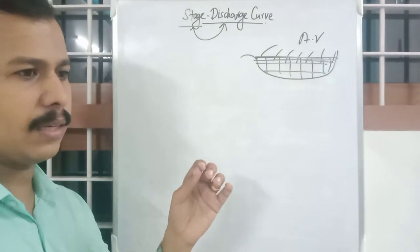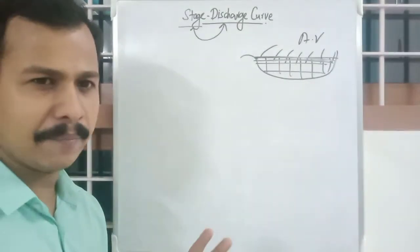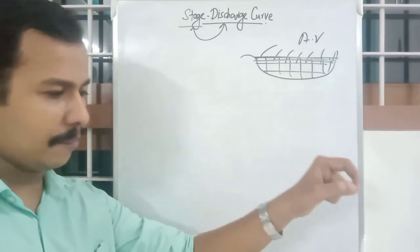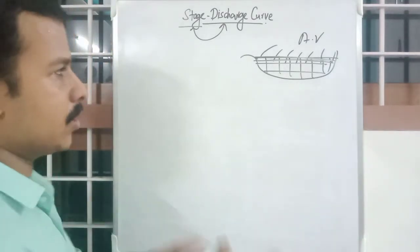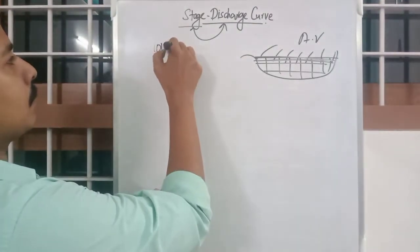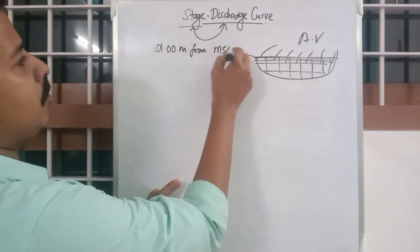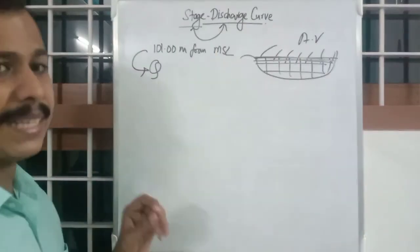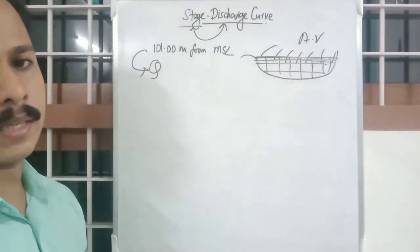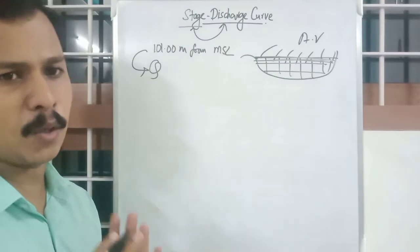Suppose in the month of November if you have a stage discharge curve of a stream and suppose if we measure the stage at that area as 101 meters from MSL and you will be having a discharge designated to this value and you can take that discharge as your discharge of stream.